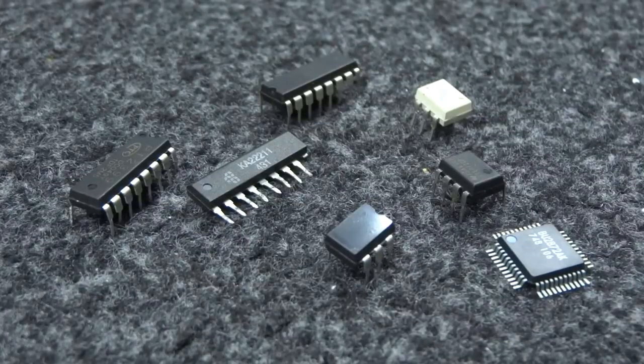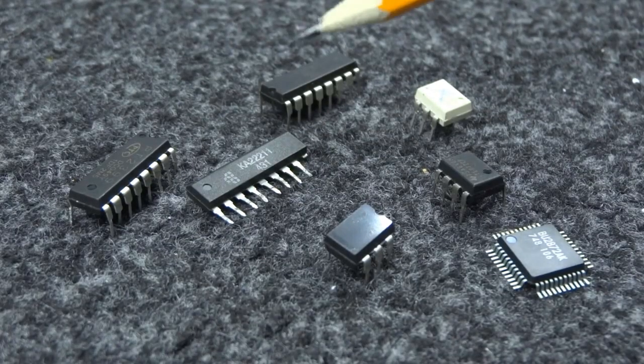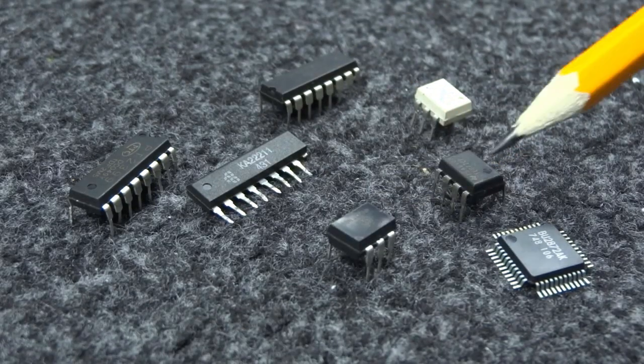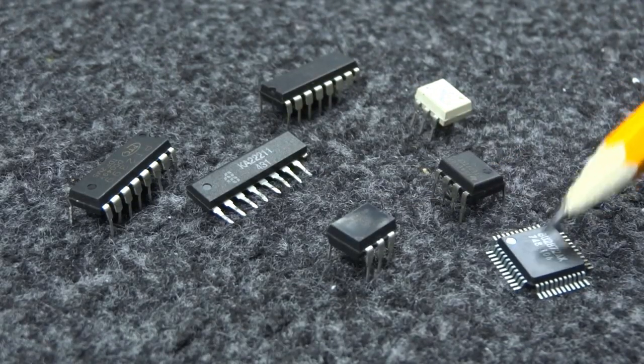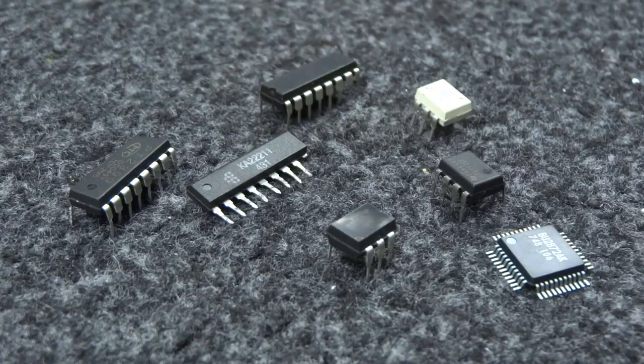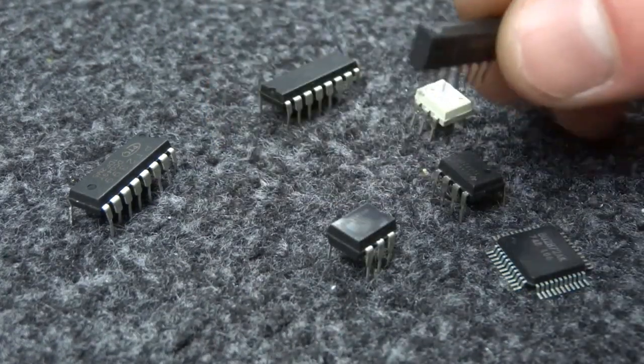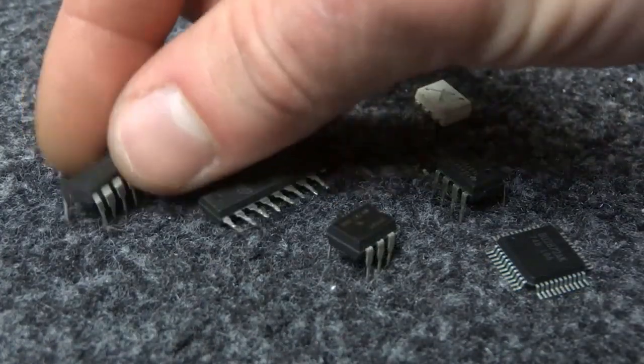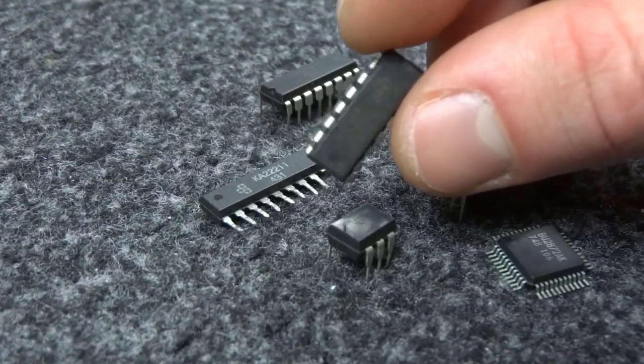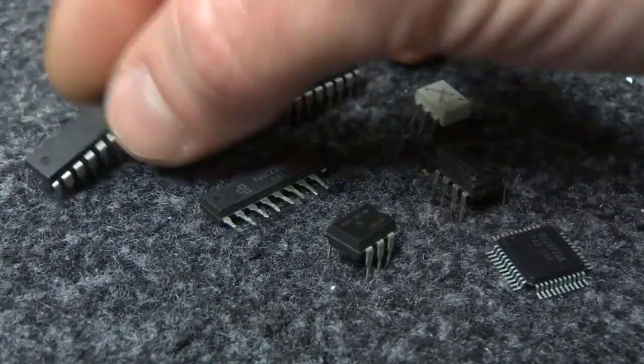Here you can see some not mounted. They have different numbers of legs and different packages and as said can be digital chips or analog integrated circuits. Some of digital ones are already pre-programmed to use in exact circuits like this PT2399 delay chip to create echo effect.